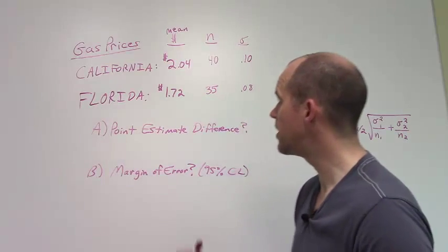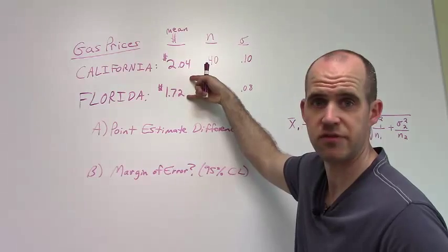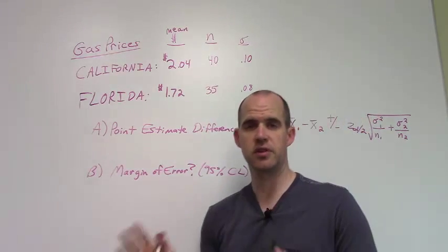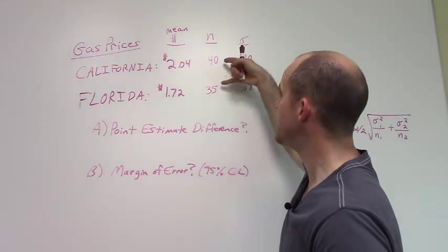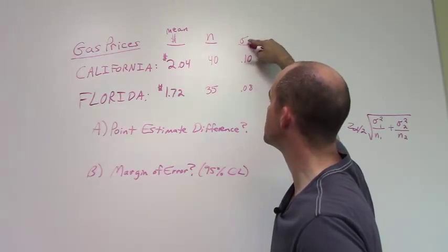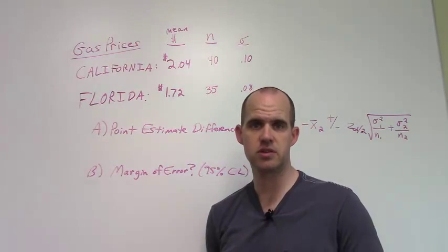All right, so first of all, what do we know? We know, again, that there's a 32 cent difference between these two during this period of time. We see our sample size, and then we have a population standard deviation for each one of these.